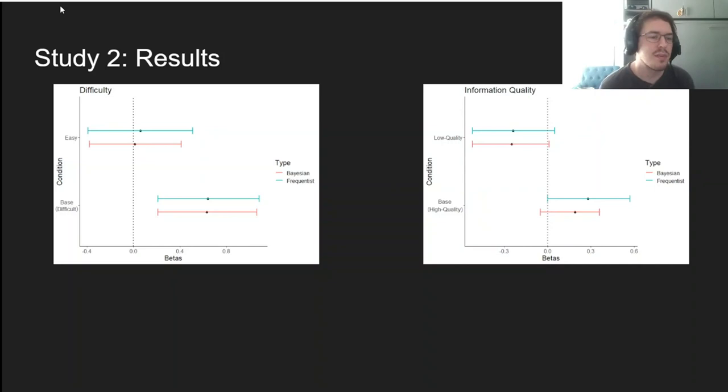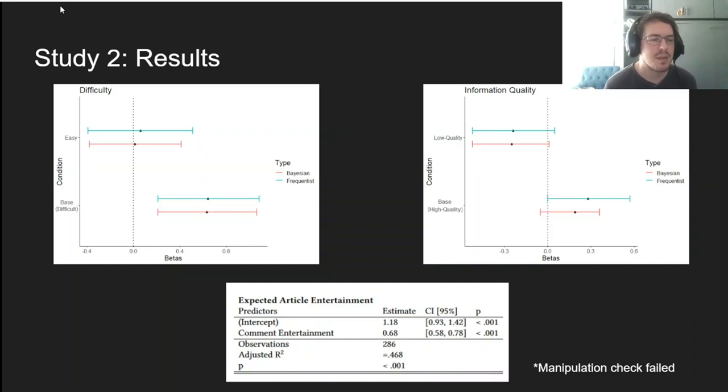Now unfortunately, I guess I'm not funny enough to write an entertaining comment, and our manipulation check for that condition failed. Given that, I won't be presenting experimental results, but we instead ran a regression predicting participants' expectations of the article's entertainment value from their ratings of the comment's entertainment values, identifying a positive relationship and somewhat supporting that hypothesis, even though these results are just correlational.